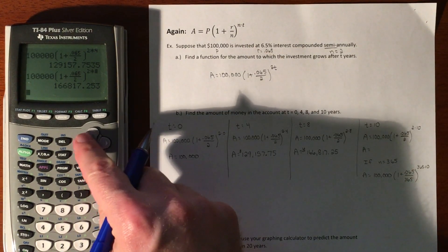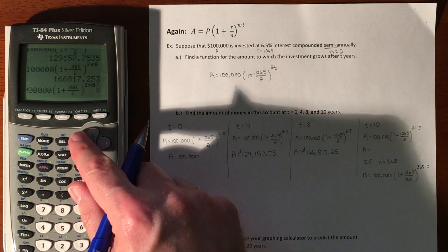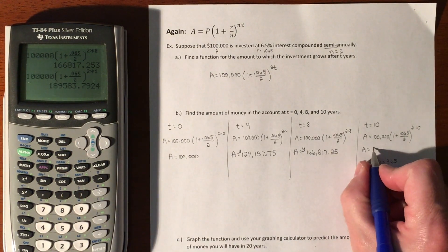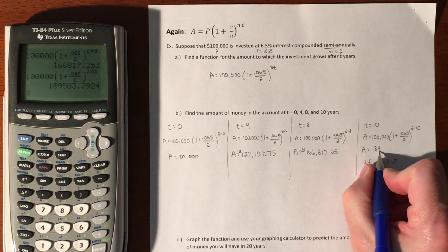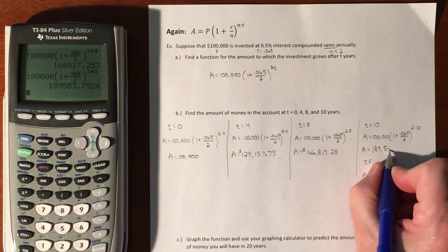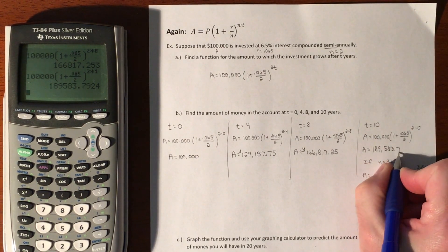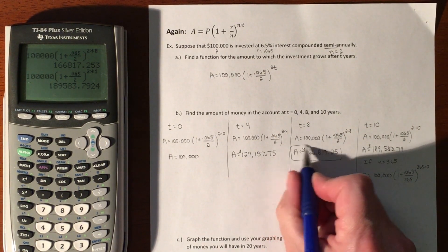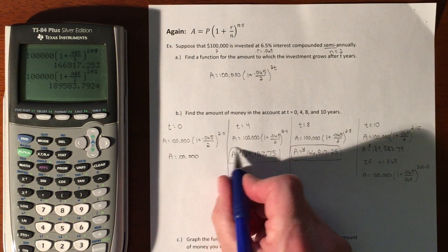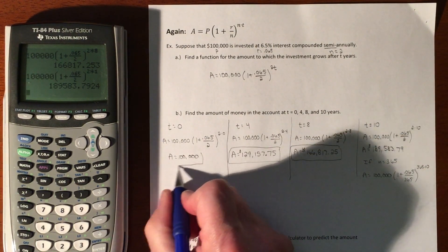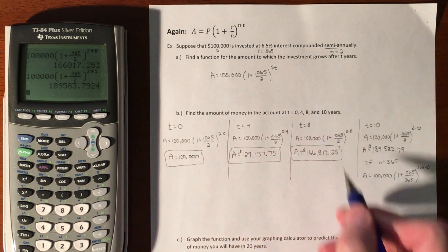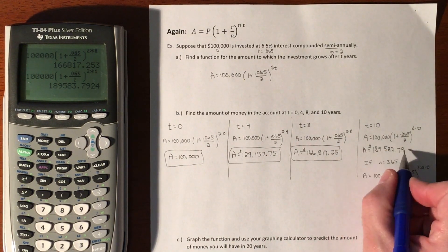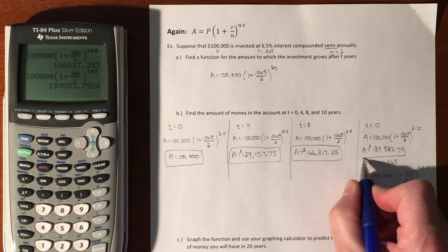If you do one more for 10 years, we'd get $189,583.79. So in 10 years, if we constantly gained 6.5% semi-annually, we would end up with $189,000, almost $190,000.